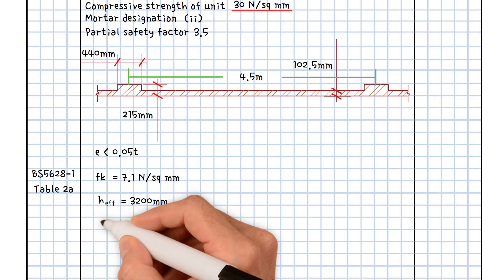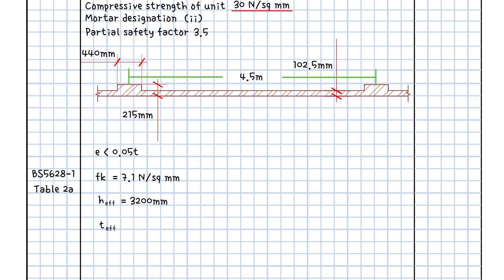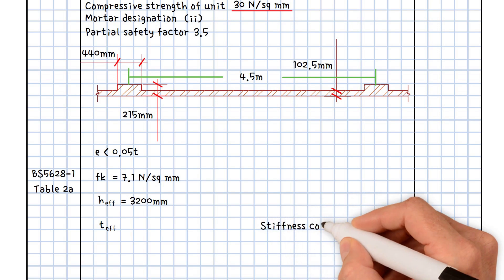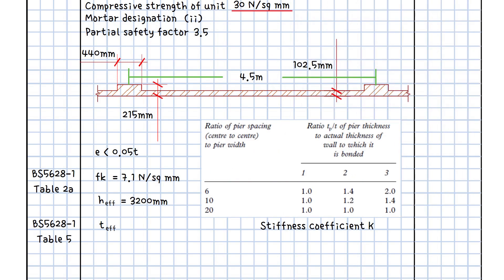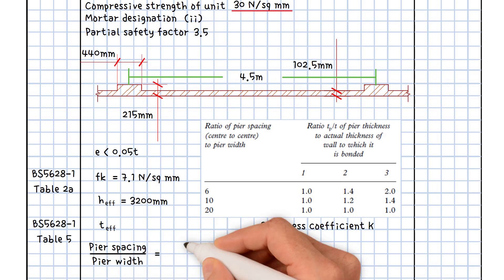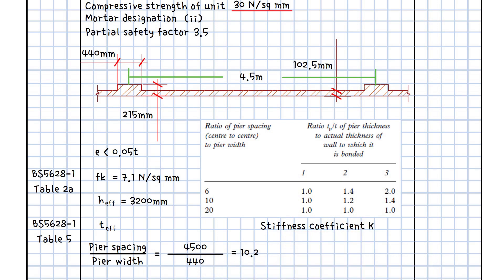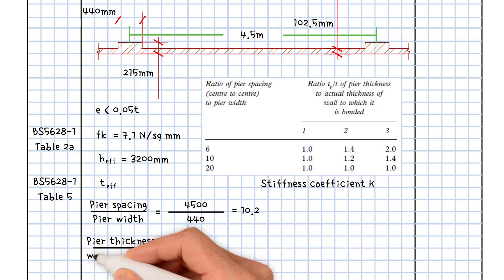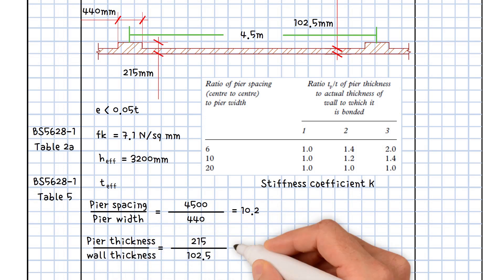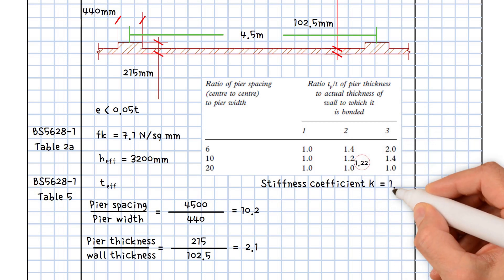The next step is to determine the effective thickness of the wall, but first, we must calculate the stiffness coefficient from BS 56281, table 5. We need to calculate the ratio of pier spacing to width, which equals 4500 divided by 440, giving us 10.2, and the ratio of pier thickness 215 to wall thickness 102.5 is 2.1. As a result of using linear interpolation in table 5, the stiffness coefficient k equals 1.22.